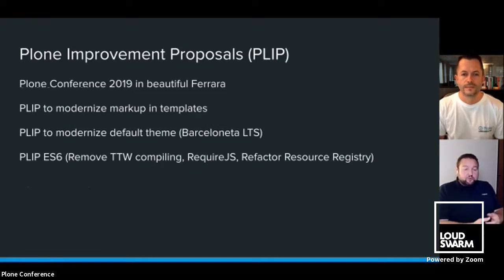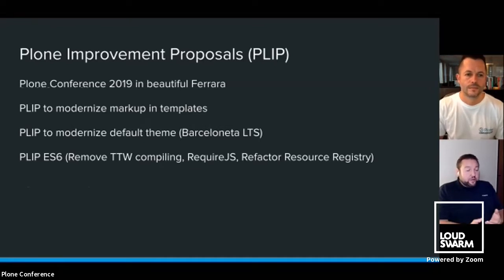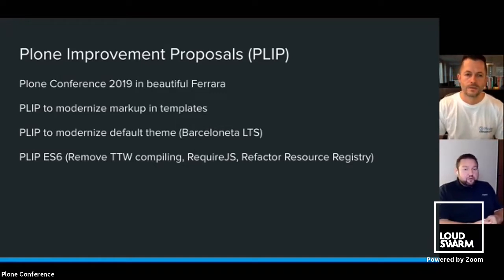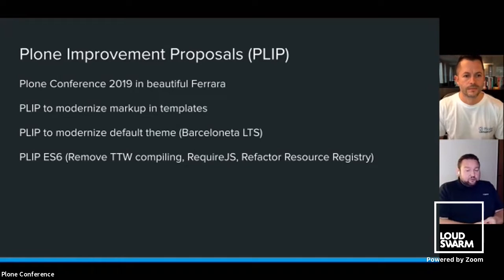We didn't want to reinvent the wheel. The solution was to switch to a framework and change Plone to use it — updating all the markup in Plone's templates to just use Bootstrap in the future. The first sprint was during the Plone conference 2019 in Ferrara. The idea was to modernize the markup in Plone core templates — updating all the templates in core, including the Formlabs z3c.form, which is responsible for all the editing stuff in the Plone backend. Everything should enable writing templates and add-ons without writing tons of CSS lines.